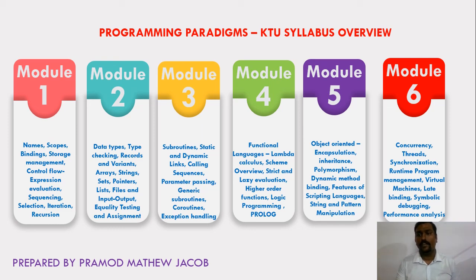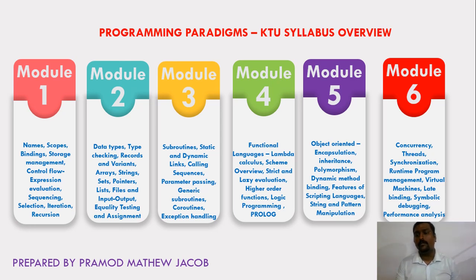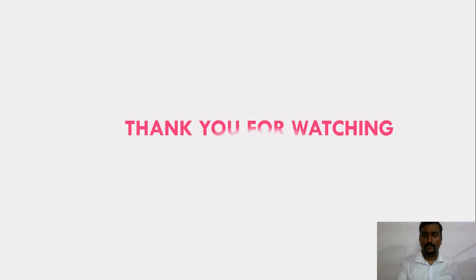In the last module, Module 6, we will learn about how concurrency and synchronization is achieved in various languages using threads, and about the runtime program management environment, including virtual machines, late binding, and how debugging and performance analysis is performed in various languages. This is the overview of our subject — in this semester we are going to learn all these concepts generically across various programming languages.